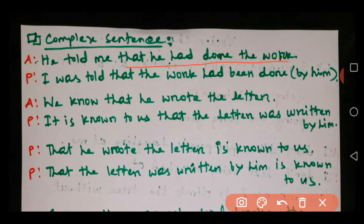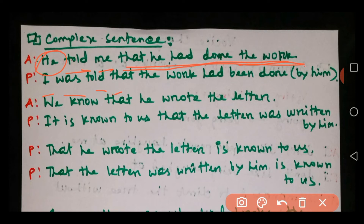We change the independent clause first into passive. We have subject 'he,' verb 'told,' object 'me' — so 'I was told.' Then we make the dependent clause into passive: the object is 'the work,' so 'that the work had been done.' We can add 'by him' at the end, but it is not mandatory — you can avoid it. So the full passive sentence is: 'I was told that the work had been done (by him).'